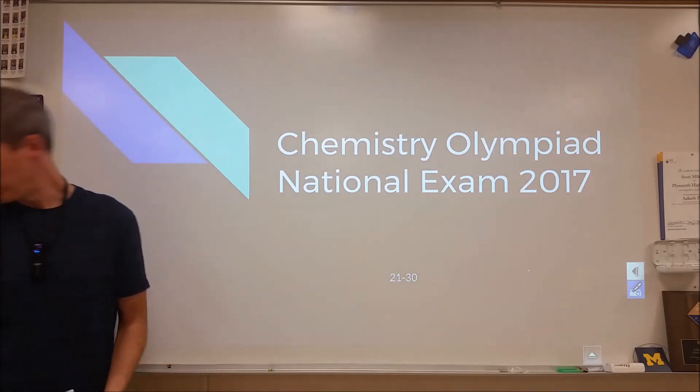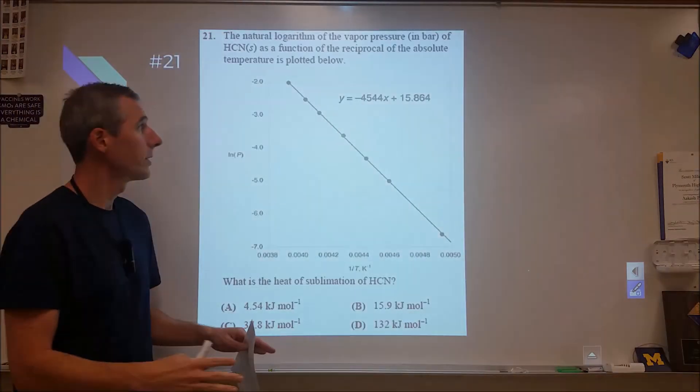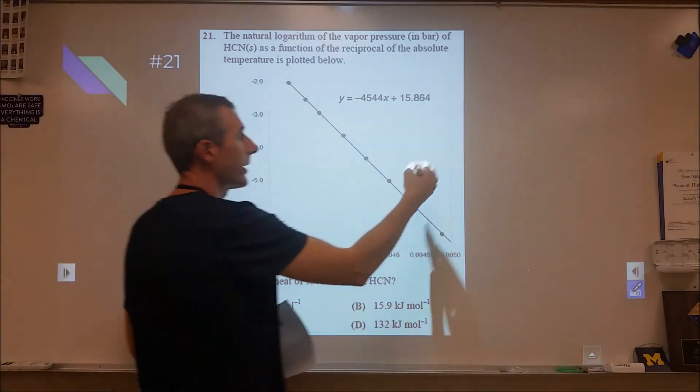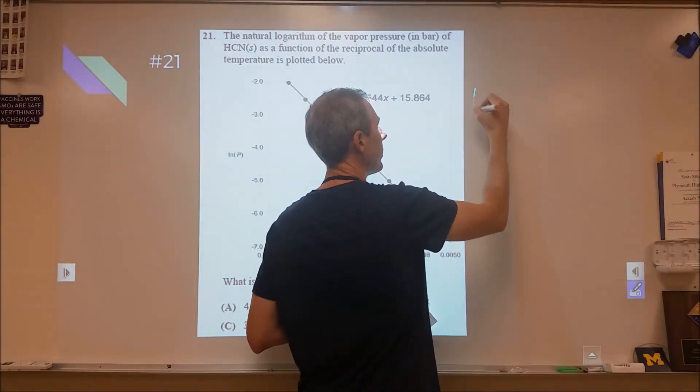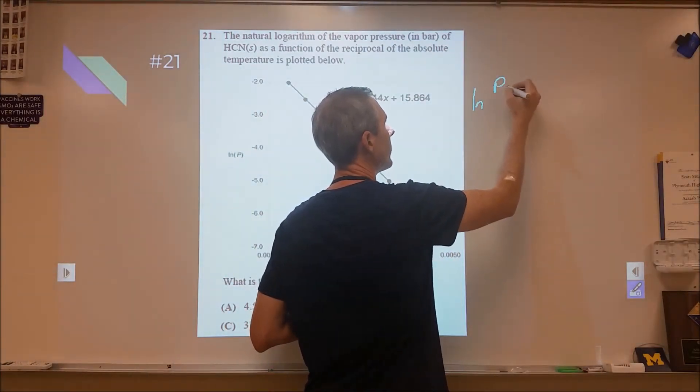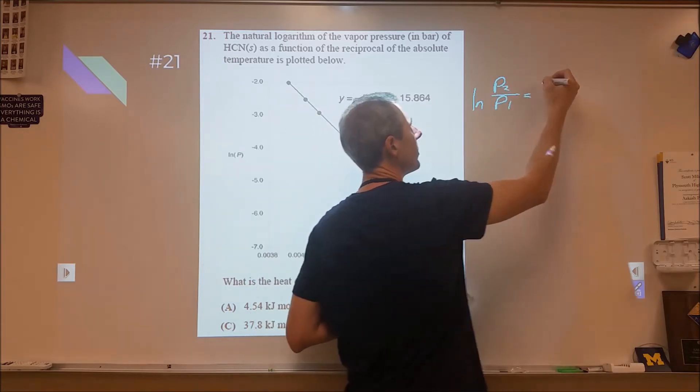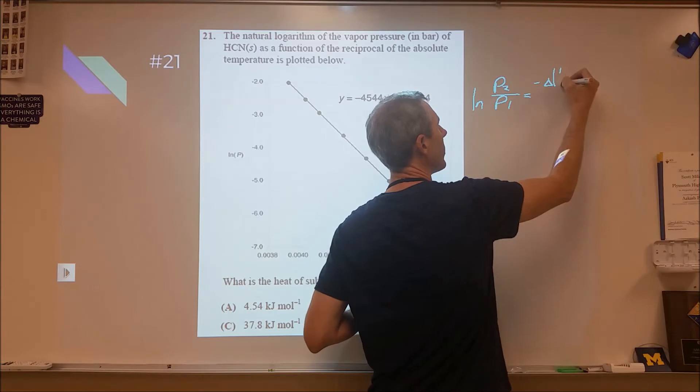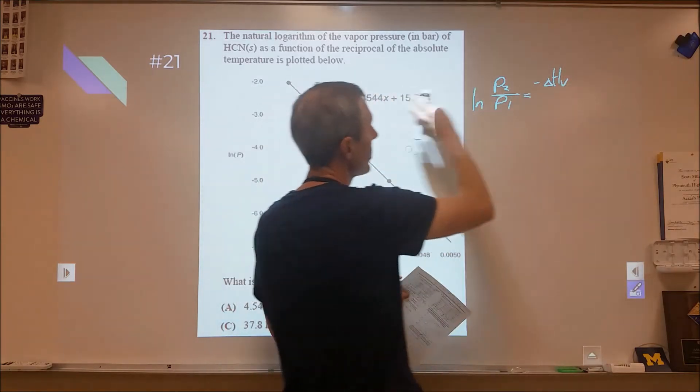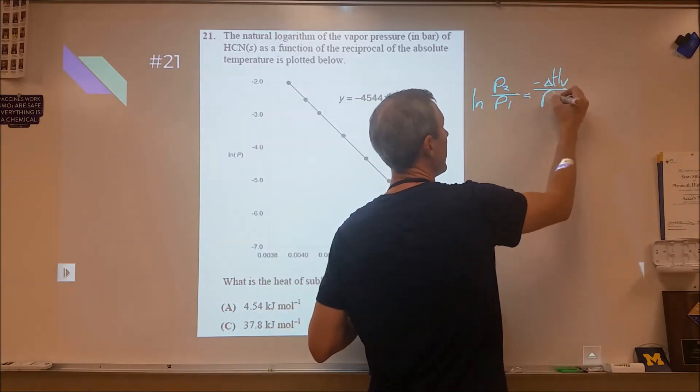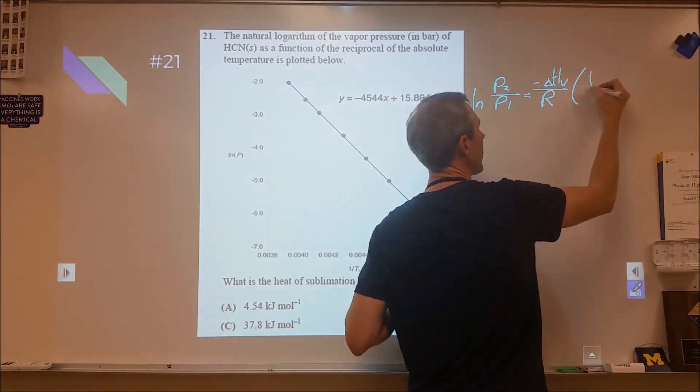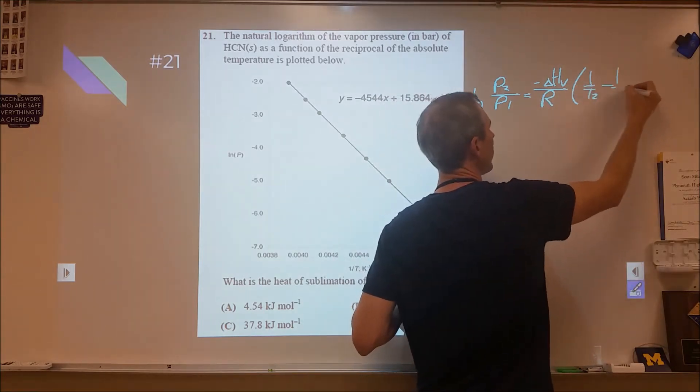So moving ahead with 21. This one is pretty intense. Here we're looking at the Clausius-Clapeyron equation, a comparison of two vapor pressures equal to negative enthalpy of vaporization—in this case sublimation—over the ideal gas constant times one over temperature minus one over temperature.